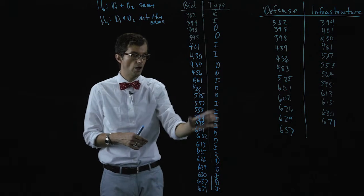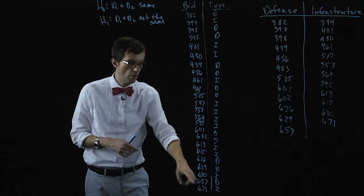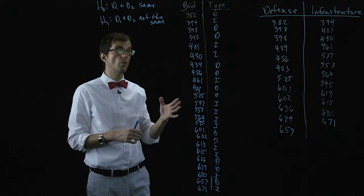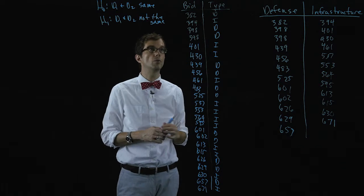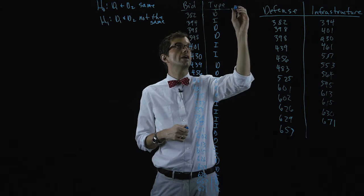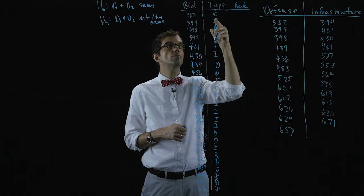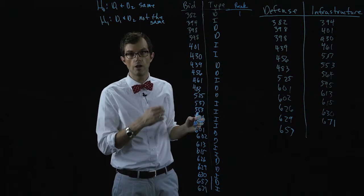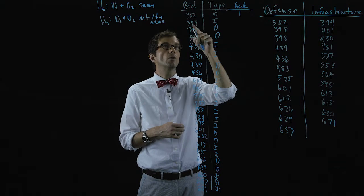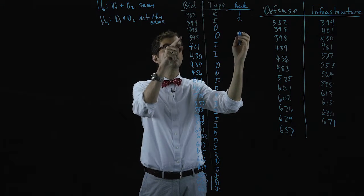So we have all of these different bids from smallest to largest and what we want to do is find the rank for each one. So the rank for this project is one, it's the smallest one. The rank for this project is two.